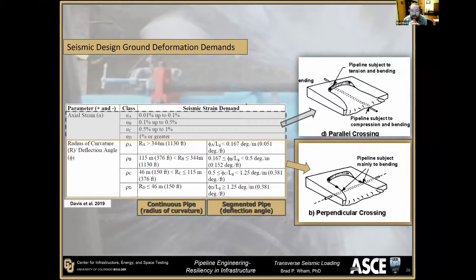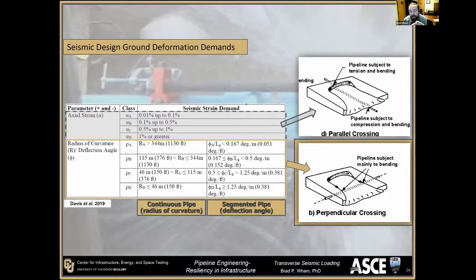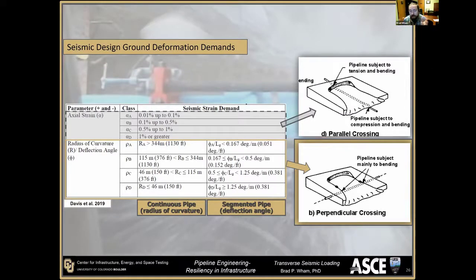The bottom half of the chart looks at lateral loading. If you imagine a pipeline crossing a ground displacement at about a 90-degree angle to the relative movement, a fault rupture would be similar to this depending on its orientation. We're thinking about how the pipe is in bending, looking at continuous pipe systems and segmented pipe systems, and how we would quantify the level of deformation those systems need to handle. For jointed pipe we're thinking about the level of deflection or rotation per length of pipe, and for continuous style pipe we're thinking about radius of curvature.